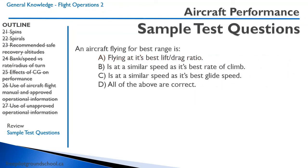An aircraft flying for best range is: A flying at its best lift-drag ratio; B at a similar speed as best rate of climb; C at a similar speed as best glide speed; D all of the above. Answer: D, all of the above are correct. Best range means the most lift and least drag — essentially the same condition as best rate of climb and best glide, both of which occur at the best lift-drag ratio.